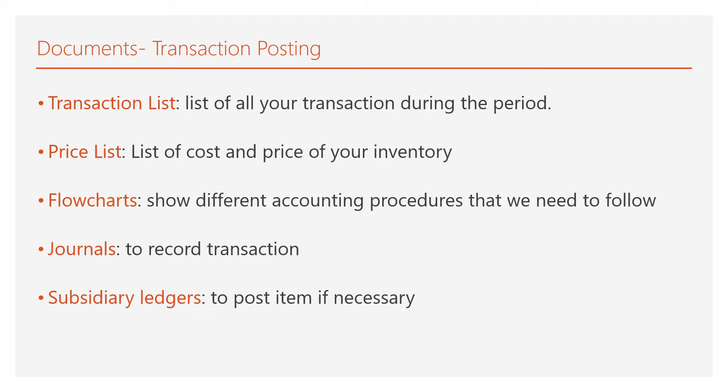Number three is the flow chart, which shows different accounting procedures that we need to follow. Number four is the journal, to record any transaction that you might have. And last but not least is the subsidiary ledger, to post items if necessary.